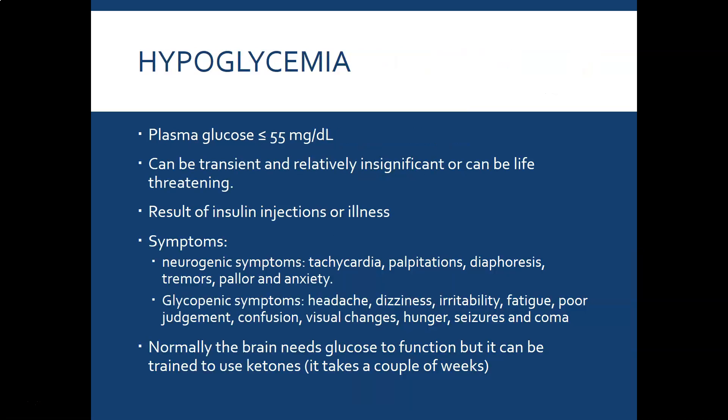Hypoglycemia is a plasma glucose level of less than 55 mg/dL. It can be transient and relatively insignificant if corrected with food, but life-threatening if not corrected. It can result from insulin injections or illness. Patients with diabetes may not realize they shouldn't take their medication when fasting for blood work, or may take insulin and then become ill — illness always affects blood sugar — leading to hypoglycemia.